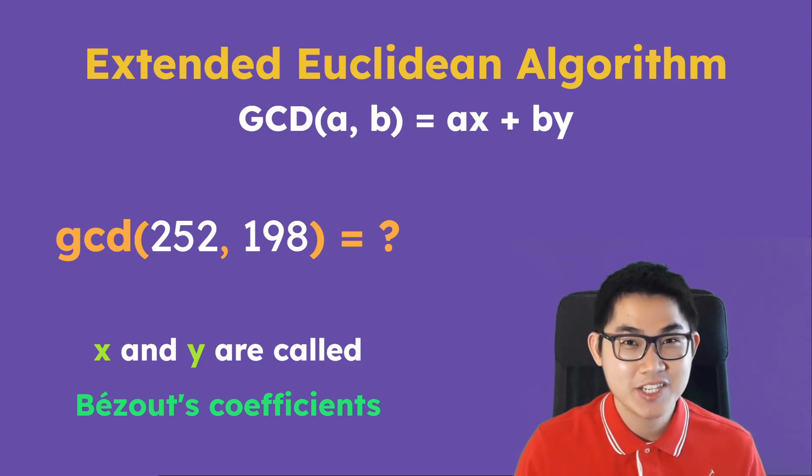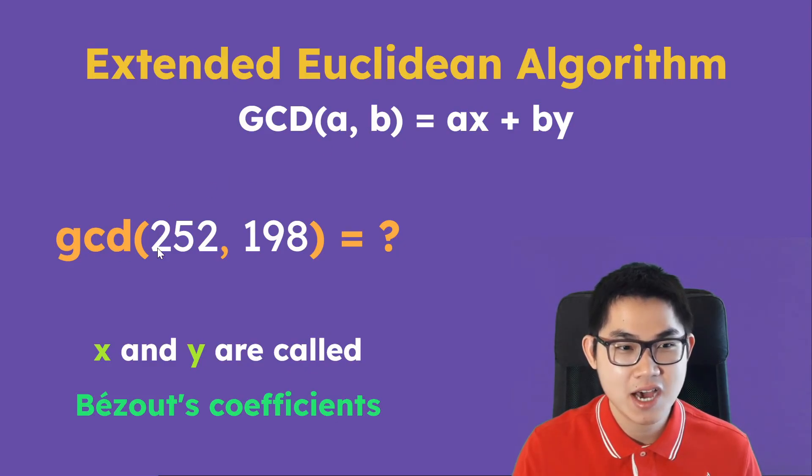And this has lots of applications in science and engineering. So let's go ahead and start with our first example, the GCD of 252 and 198.